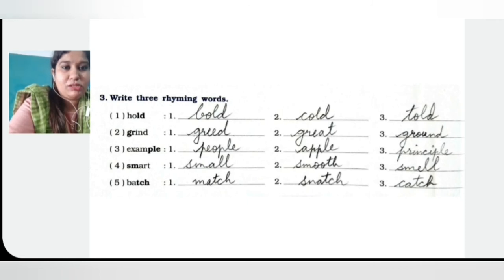Number 2 is grind — we need G-R at the beginning. So G-R-I-N-D — grind, G-R-E-A-T — great, and G-R-O-U-N-D — ground. All words begin with G-R.